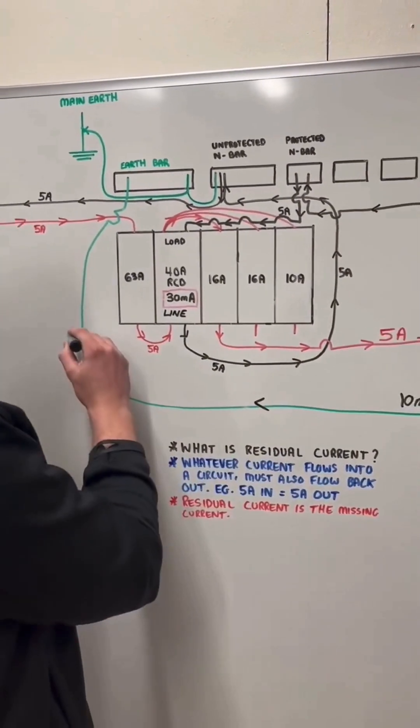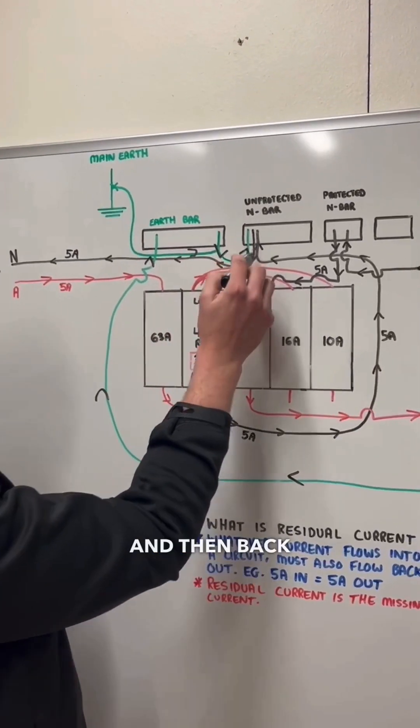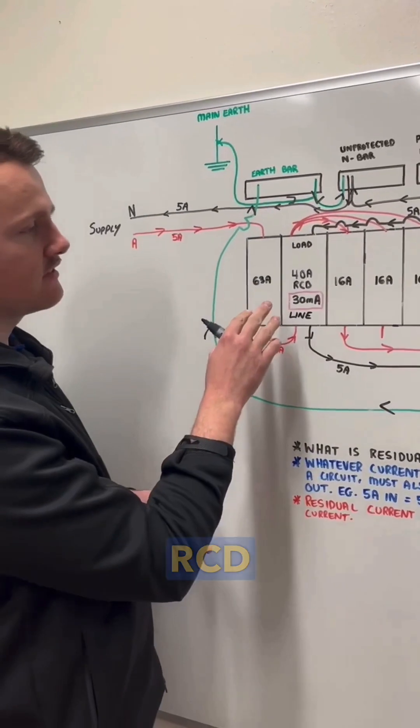That current will just travel up through the earth bar, across into the MEM and then back through the neutral that way. So it's still going to get back to its source and the RCD won't trip it off.